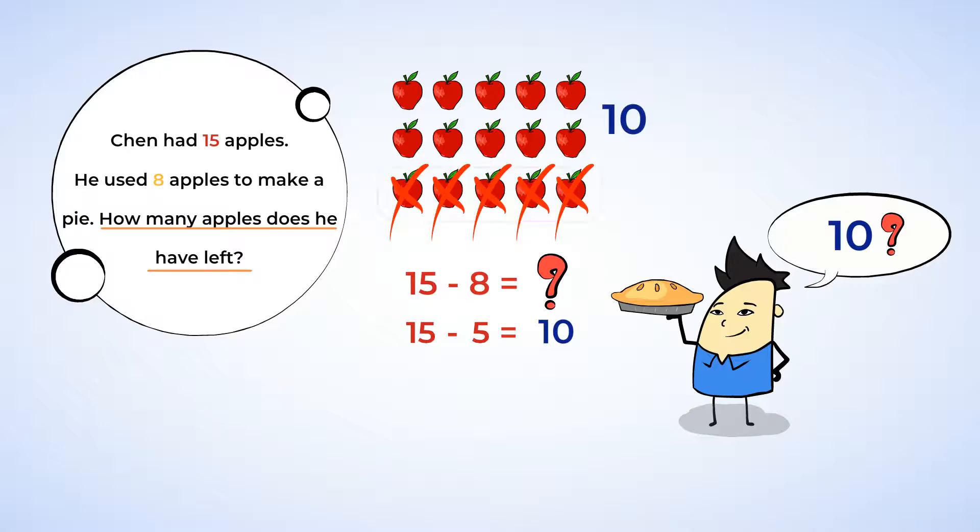However, we only subtracted 5 apples, not 8. And this means that we need to subtract 3 more apples. 10 minus 3 equals 7. Chen has 7 apples left. Good job. You're on a roll. Let's play this just one more time.